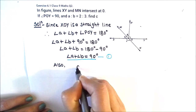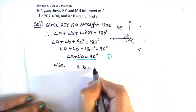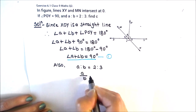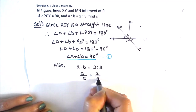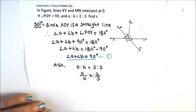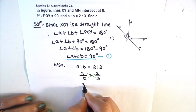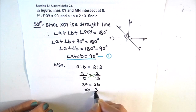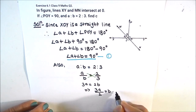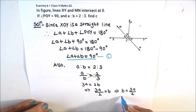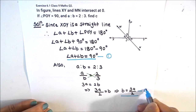We have also been given the ratio of A to B as 2 to 3. We write A upon B equals 2 upon 3, then use cross multiplication: 3A equals 2B, so B equals 3A upon 2. This is our second equation.